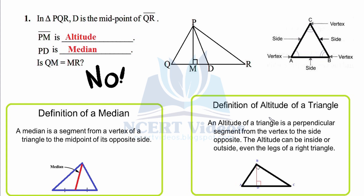An altitude of a triangle is a perpendicular segment — perpendicular meaning 90 degrees — drawn from a vertex to the opposite side. The altitude can be inside or outside the triangle, even forming the legs of a right triangle. The opposite side is the side facing the angle at that vertex.